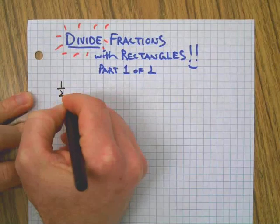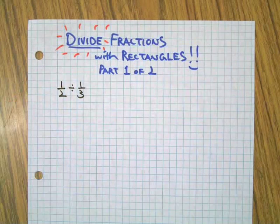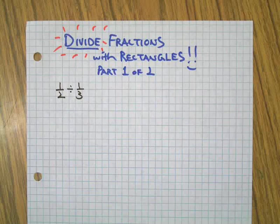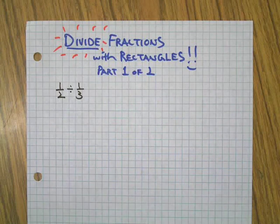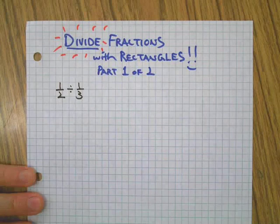First of all, let's start with a very simple one: one-half divided by one-third. It's good to always use super simple examples. Maybe you already know the answer to it. That way when you work out a new strategy you'll know if the strategy works or not.